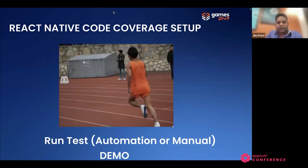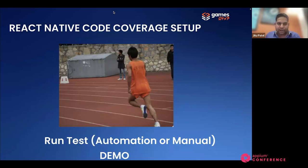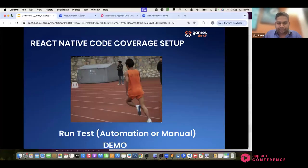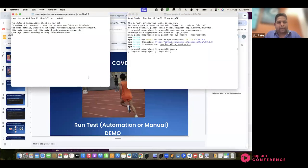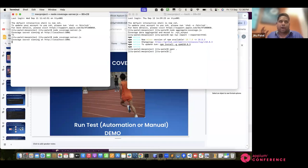Now I'll show the demo. In the setup, what we did was add code in the activity launcher — app.tsx — then we instrumented it by running the dev dependency code. Now I'm running my automation along with manual testing. I have just started the coverage server. This is the server running which will catch all the code coverage done by the automation phones or the manual testing and dump it in local memory.